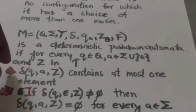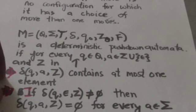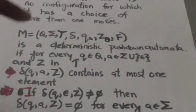If a pushdown automata M satisfies both of these conditions, then the pushdown automata M is a deterministic pushdown automata.